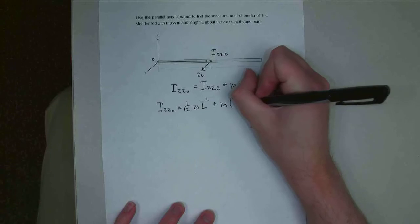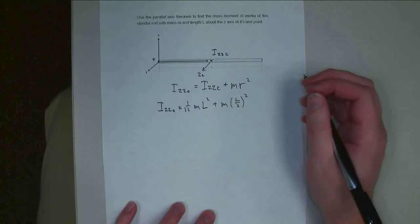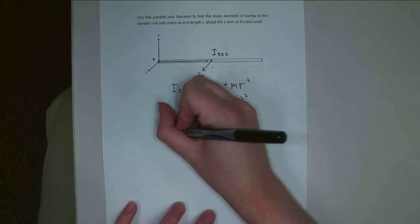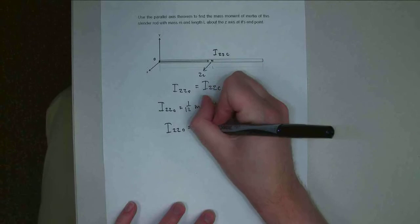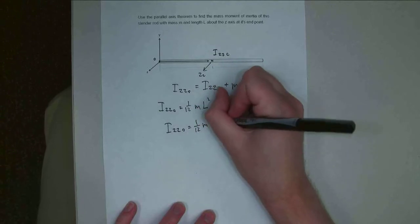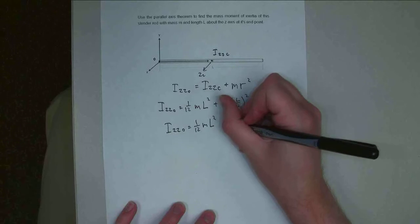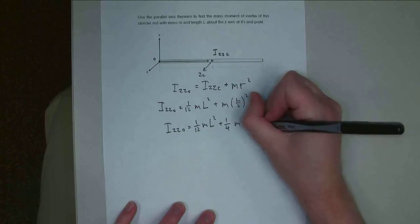So Izzo is going to be equal to 1/12 ml squared, and this is going to turn out to be plus 1/4 m l squared.